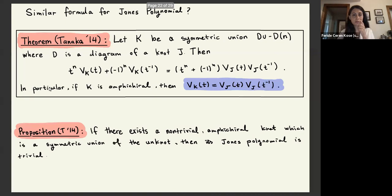Then from this, Tanaka immediately observes that if we find the symmetric union of the unknot, which is non-trivial and amphichiral, then the Jones polynomial will be trivial. And we basically answer the question that we stated at the beginning of the talk.